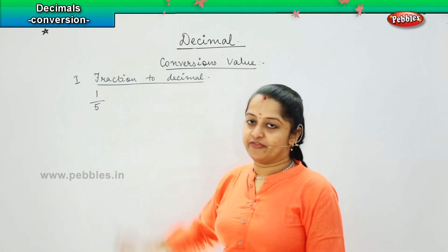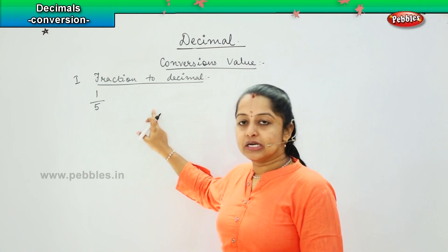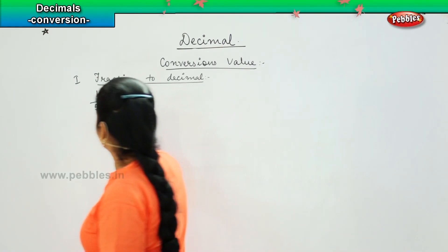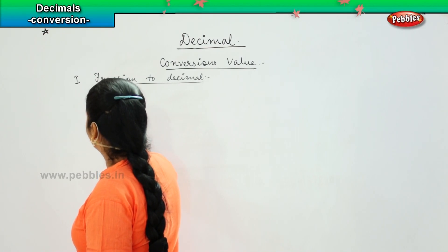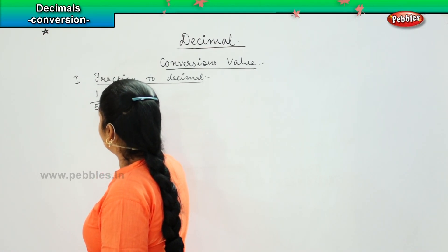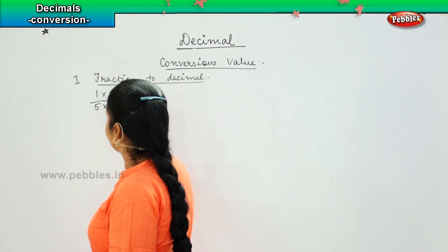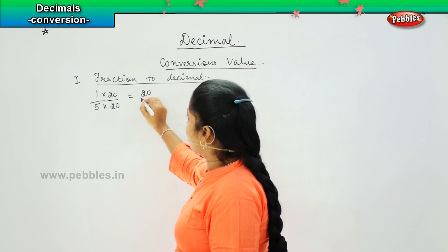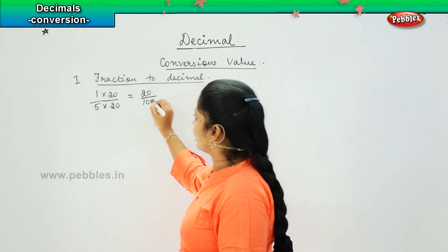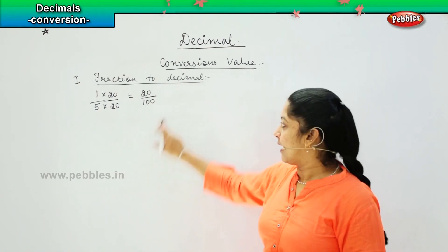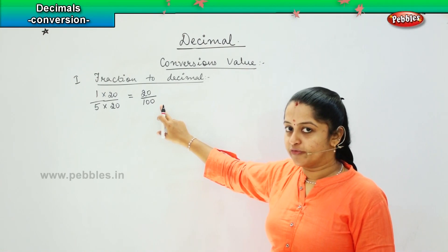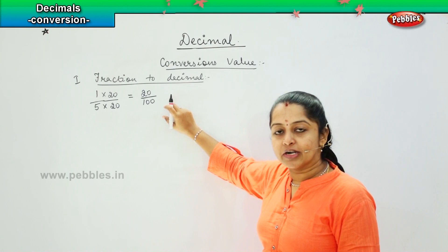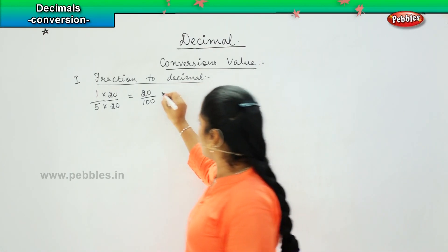So now if I write 1/5, what is the easiest way to convert it? I can write it as, if I multiply 5 into 20 and similarly 1 into 20, I will be getting a value of 20/100. So now is it possible for me to convert it into fraction? No, this is the fraction value. So now can I convert it into decimal? Yes. So how will you convert it?